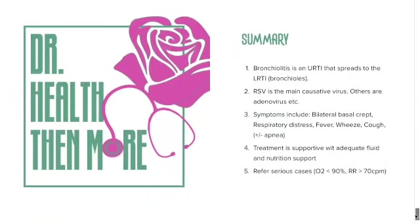In summary, bronchiolitis is an upper respiratory tract infection that spreads to the lower respiratory tract — that's the bronchioles — and RSV is the main causative virus, with adenovirus among others. Symptoms include bilateral basal crepitations, respiratory distress, fever, wheeze, cough, and apnea. Treatment is supportive with adequate food and nutrition support, and you should refer serious cases with a respiratory rate greater than 70 cycles per minute or oxygen saturation less than 92%.